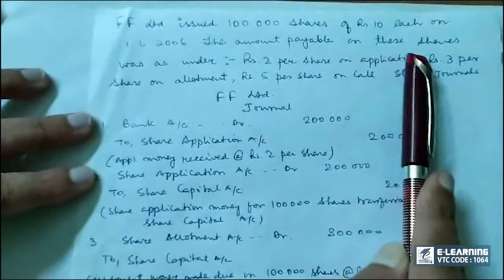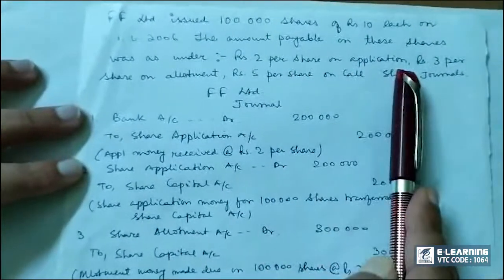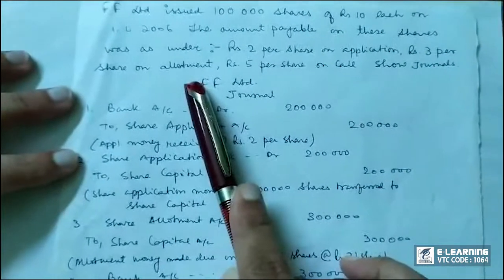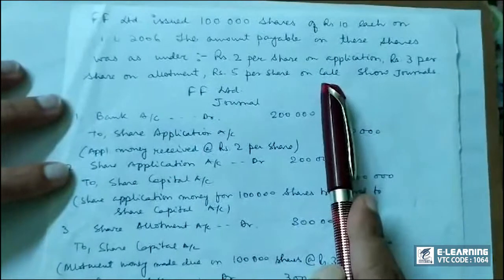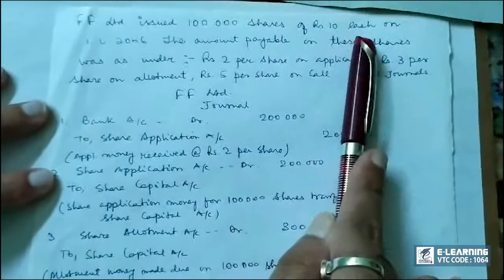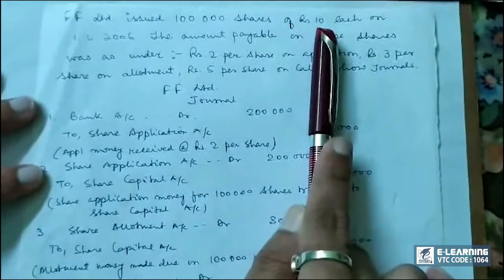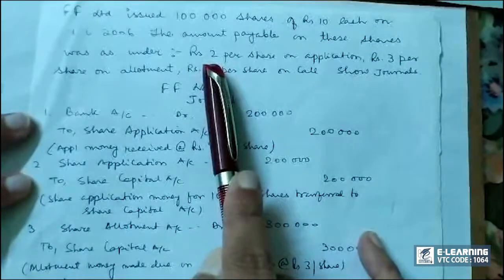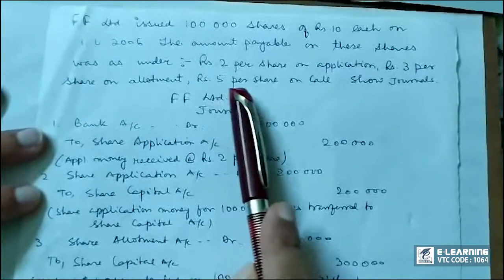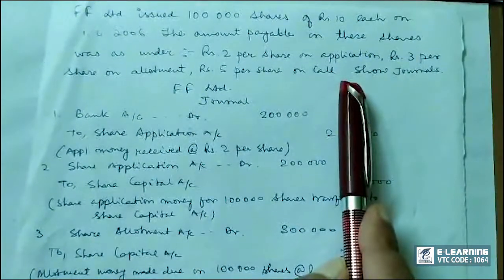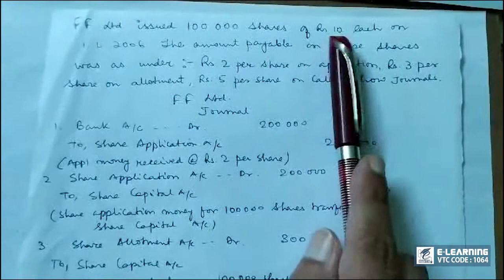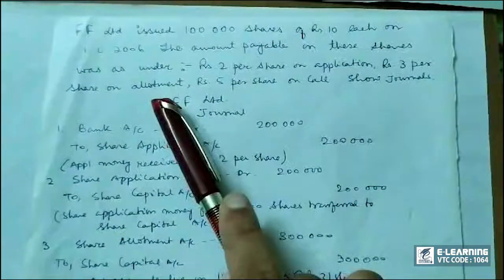The amount payable on these shares was as under: rupees 2 per share on application, rupees 3 per share on allotment, rupees 5 per share on call. This rupees 10 is split up as 2 per share on application plus 3 per share on allotment is 5, and rupees 5 per share on call — so 2 plus 3 plus 5 is rupees 10, split up into 3 parts: application, allotment, and call.